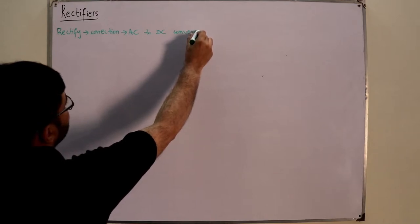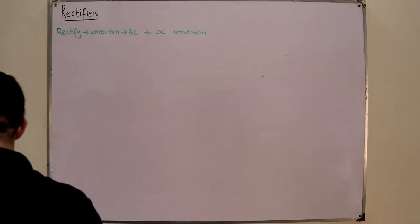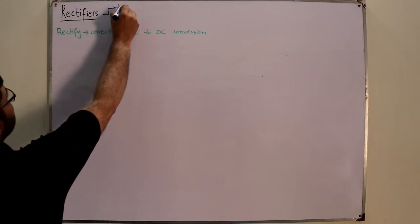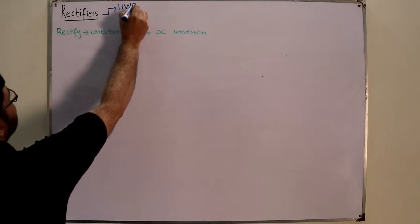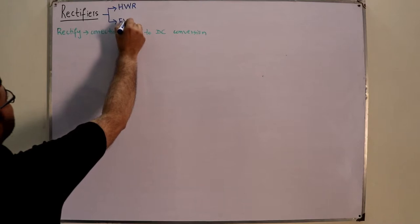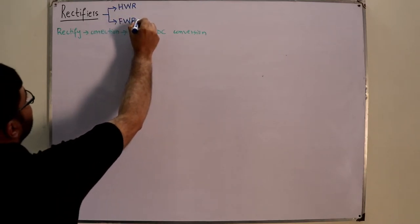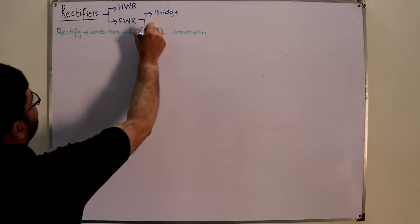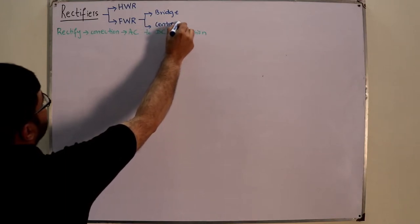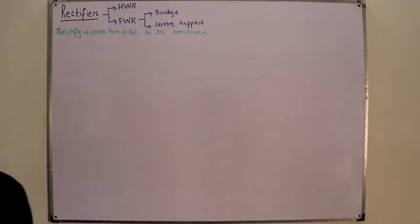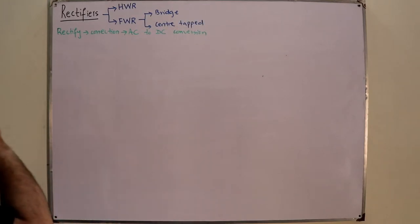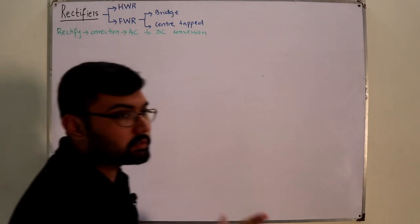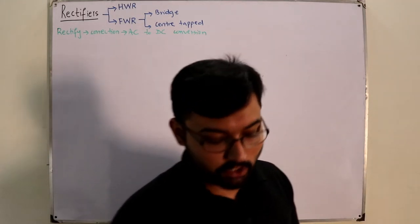We have two types of rectifiers: the first is a half wave rectifier and the second is the full wave rectifier. Within the full wave rectifier we have a bridge rectifier circuit and a center-tap transformer. So we are going to study these — you could say there are three videos on rectifiers in total. The difference between them you will understand as we progress.